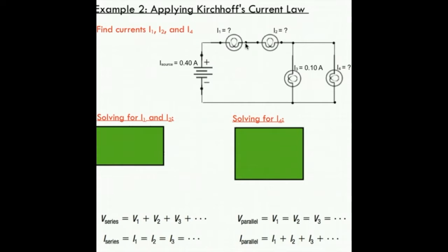I also know that the current leaving that junction has to be 0.4 amperes as well. Since that current is leaving this lamp and entering this lamp, we can conclude that it's the same current that left this battery source over here. My current leaving my source is 0.4 amperes, which means that I1 and I2 are also 0.4 amperes.